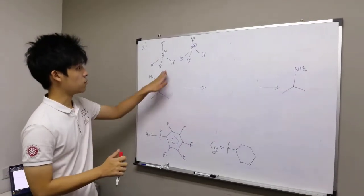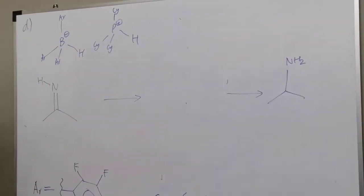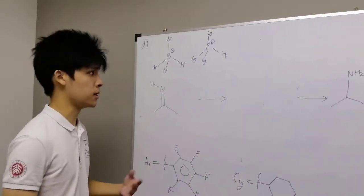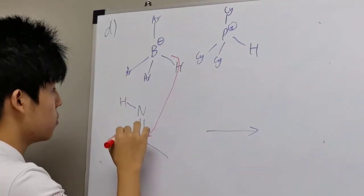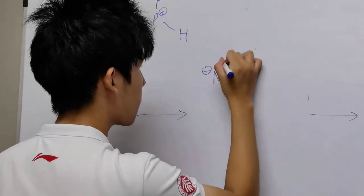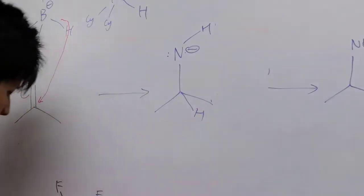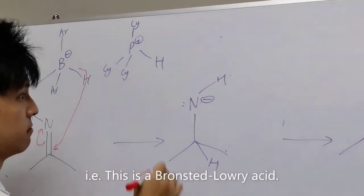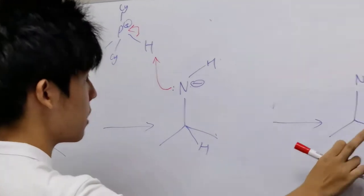For part D, we are told that the products from part C actually help to reduce imines to amines. We are abbreviating this big group as AR and this big group as CY for simplicity. The first thing: this species is a hydride donor. So it donates this hydride to the electrophilic carbon here to produce this product. And now, this is an H⁺ donor — i.e., this is an acid — so it takes an H⁺ from this compound to produce our final amine.